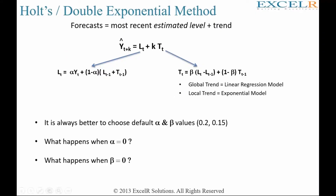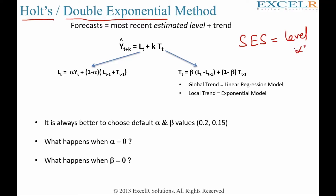We have already discussed simple exponential smoothing. Now let us discuss Holt's technique, which is also called the double exponential method. In simple exponential smoothing, we have only the level component, captured using alpha as a coefficient. But in double exponential or Holt's technique, you will have both the level and the trend. The level component uses alpha as a coefficient, and the trend component uses beta.